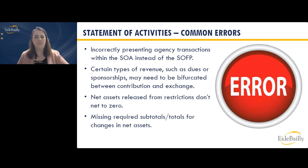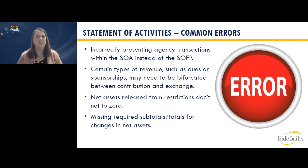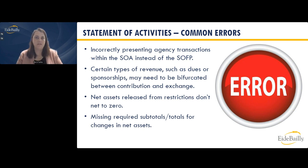Common errors in the statement of activities: incorrectly presenting agency transactions — make sure you understand what an agency transaction is and get it recorded correctly in your accounting system. Certain types of revenue, such as dues and sponsorships, may need to be bifurcated. For example, if someone purchases a table at a gala, part of that is an exchange transaction and part is a contribution — those need to be split out and evaluated separately for recognition. This also applies to dues where part may be a contribution.